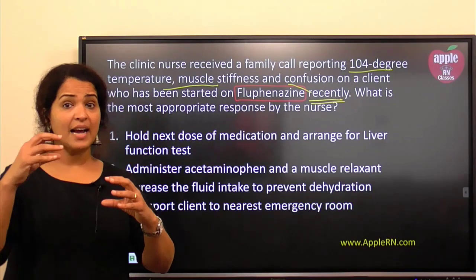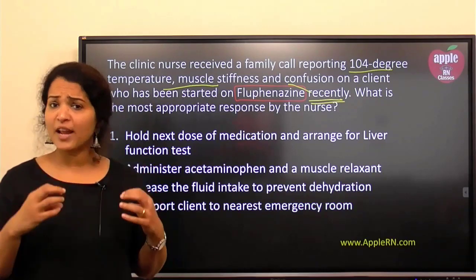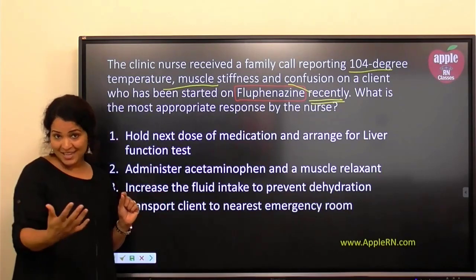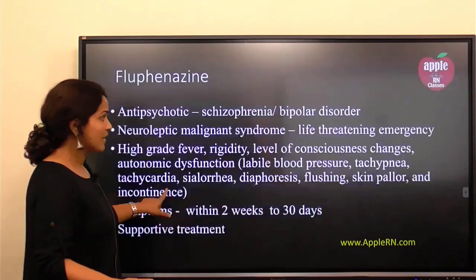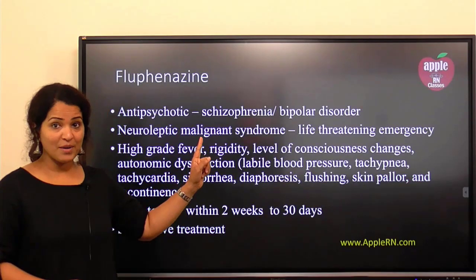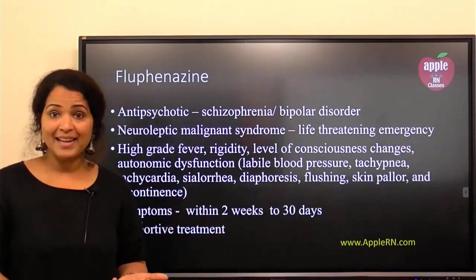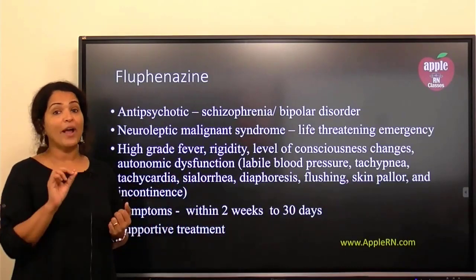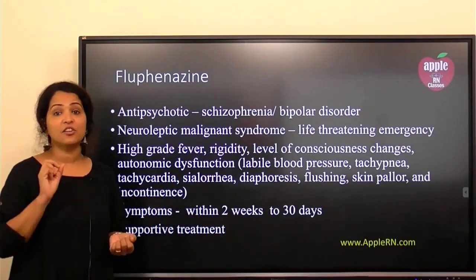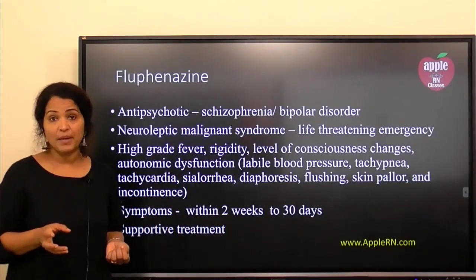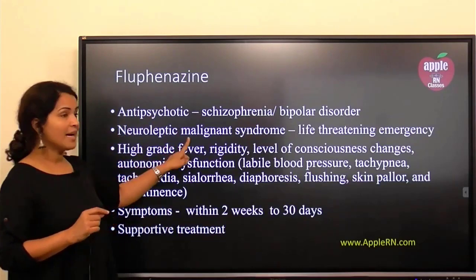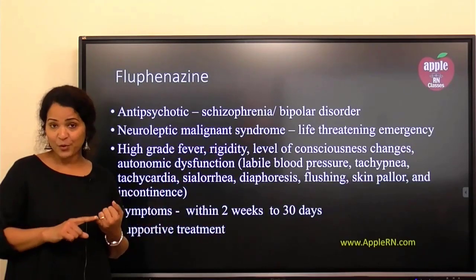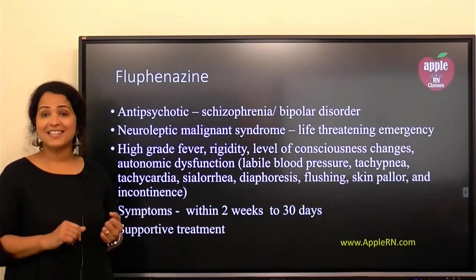What is this situation? If you remember from the mental health class, antipsychotic medications — normally used for mental illnesses like schizophrenia and bipolar disorders — have a very life-threatening emergency, rare disease complication which can happen. That is neuroleptic malignant syndrome. What happens in neuroleptic malignant syndrome? High-grade fever, rigidity, and level of consciousness changes.